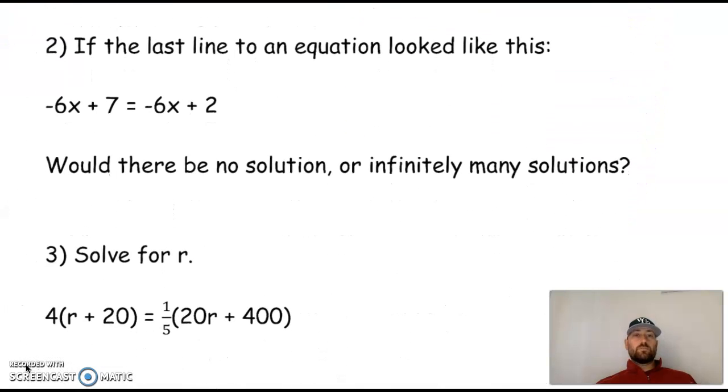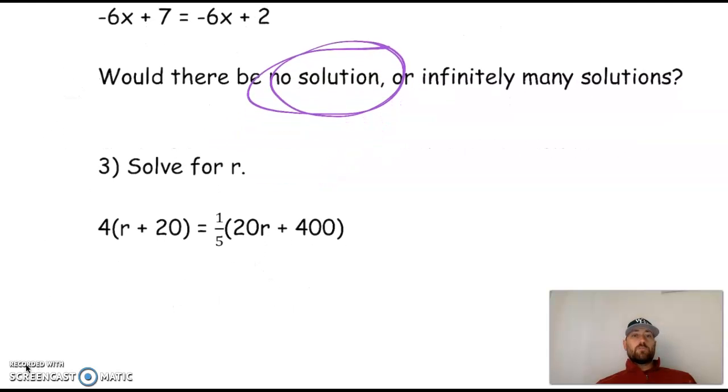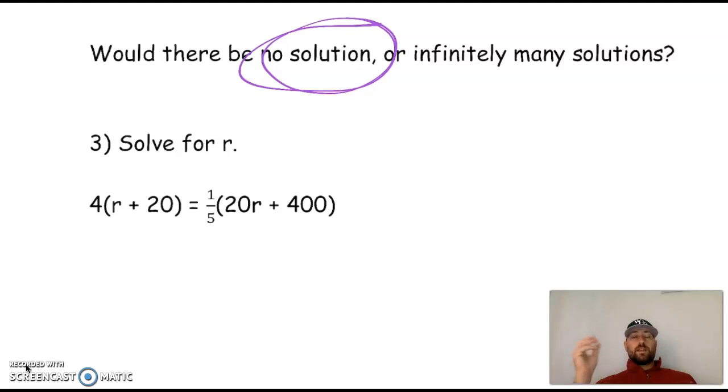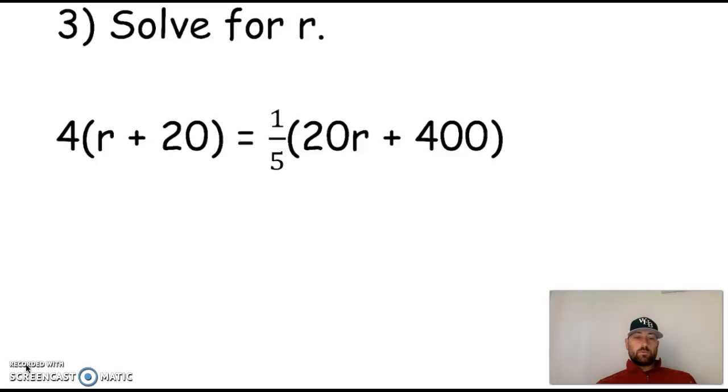Okay. Let's look at number two. Is it going to be no solution or infinitely many? That one has same coefficient, different constants. So if I took the negative 6x away from both sides, seven equal to two is not true. That is no solution. All right. Here we go. For number three, I want you to simplify and then solve to figure out, is that going to be infinitely many or no solution?